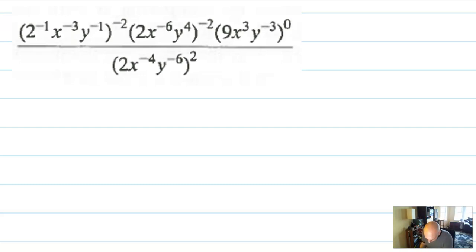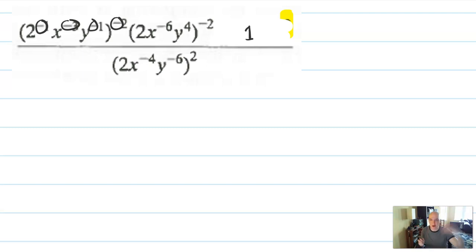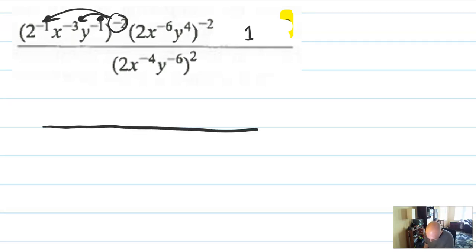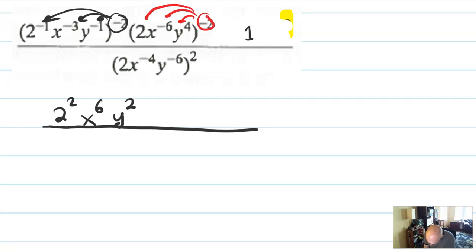And finally, a real monster. A couple of approaches here. First, I notice there's a zero power — that entire term with the zero power just goes away and becomes 1; I'm not even going to write it. I see a lot of multiplied negative exponents. Instead of moving things around up and down multiple times, I think it's best to bring all those exponents in. The 2 applies to all three terms on top: 2 to the positive 2, x to the positive 6, y to the positive 2. Then the negative 2 applies to its terms: 2 to the negative 2, x to the positive 12, y to the negative 8. And finally for the bottom, the positive 2 applies: 2 squared, x to the negative 8, y to the negative 12.